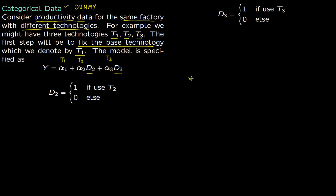Say you have data and produce 500 units using technology 1. You set D2 as 0 and D3 as 0. Alpha 1, alpha 2, and alpha 3 are coefficients determined from regression, and D2 and D3 are the dummy variables. Notice there is no T1 column in the dataset because T1 is the base, corresponding to alpha 1 with nothing multiplied by it.